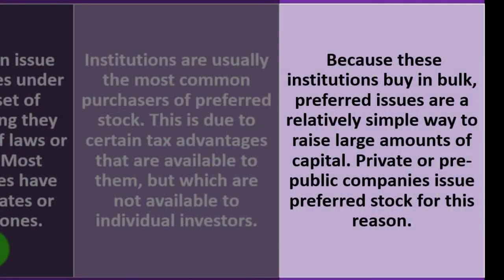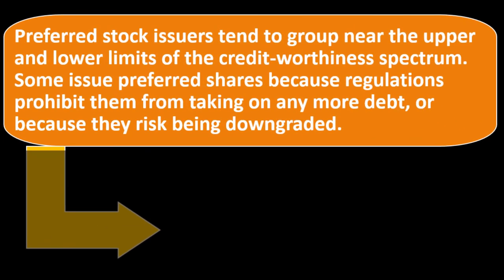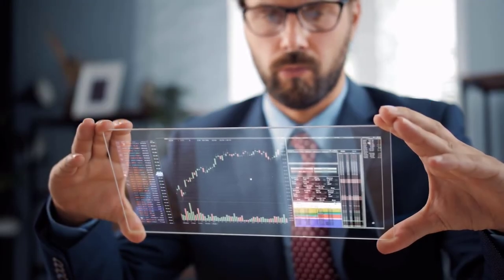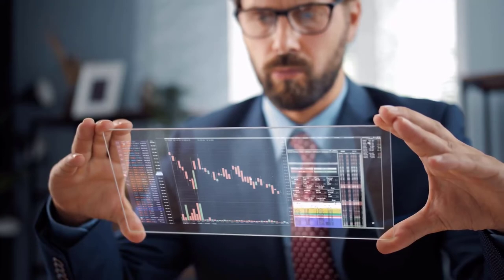Unlike bonds, preferred stock has no maturity date, which makes valuing it somewhat different in terms of future payments expected. Because institutions buy in bulk, preferred issues are a relatively simple way to raise large amounts of capital. Private or public companies issue preferred stock for this reason. Preferred stock issuers tend to group near the upper and lower limits of the creditworthiness spectrum. Some issue preferred shares because regulations prohibit them from taking on more debt or because they risk being downgraded.